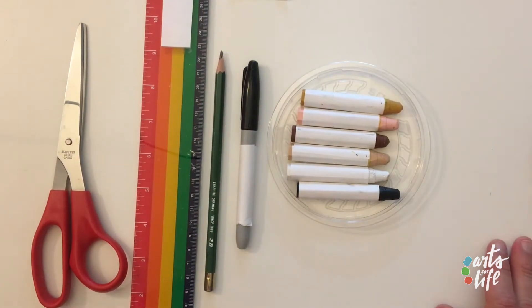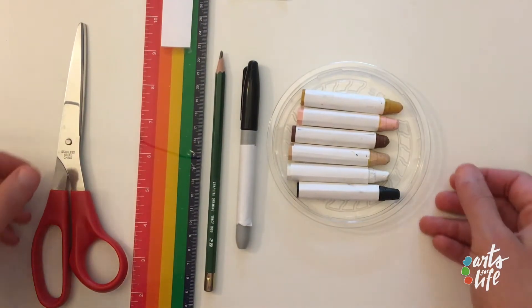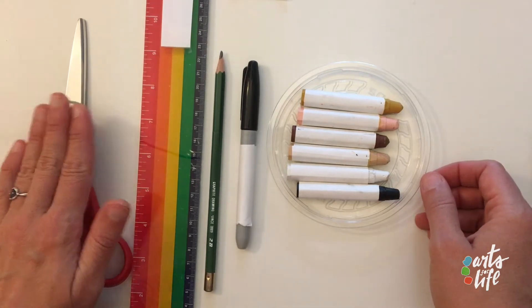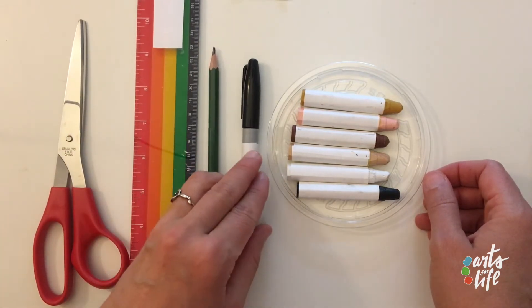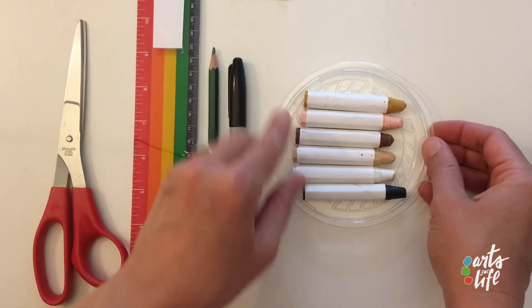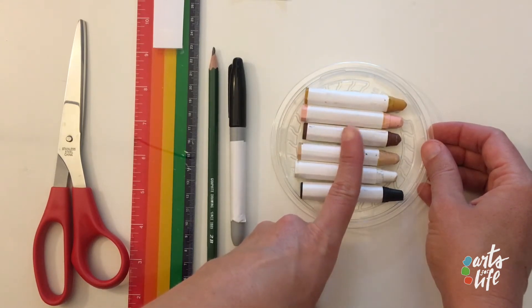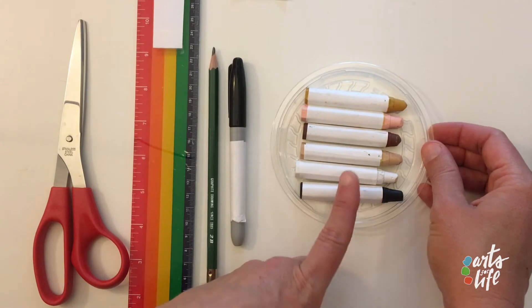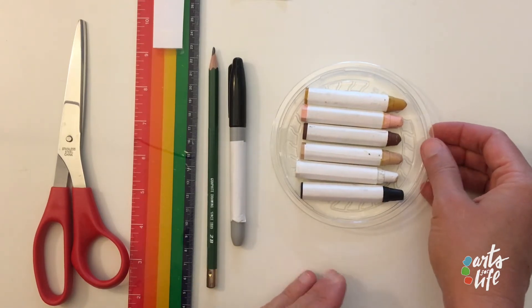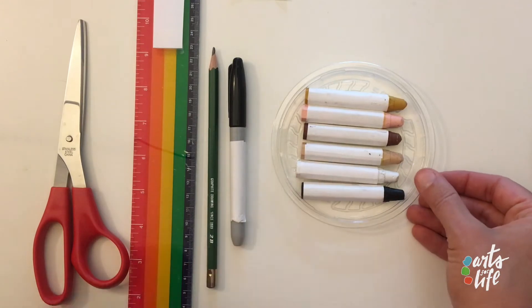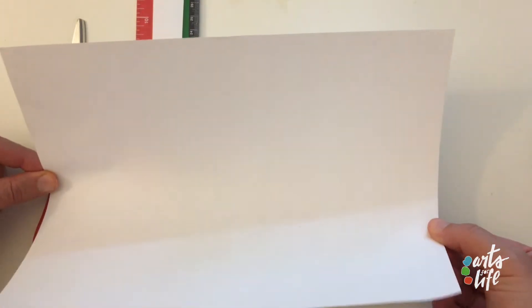Okay here we are with our materials for our origami blinking eye. You will need scissors, a ruler, a pencil, a permanent marker, and something to color with. These are oil pastel sticks. They're wonderful for a rich color. If you don't have oil pastels you could use colored pencils. Markers are okay but I would prefer oil pastels or colored pencils. The most important thing you'll need is a piece of paper. This is just printer paper. If you have white origami paper that works but I would just go with printer paper.